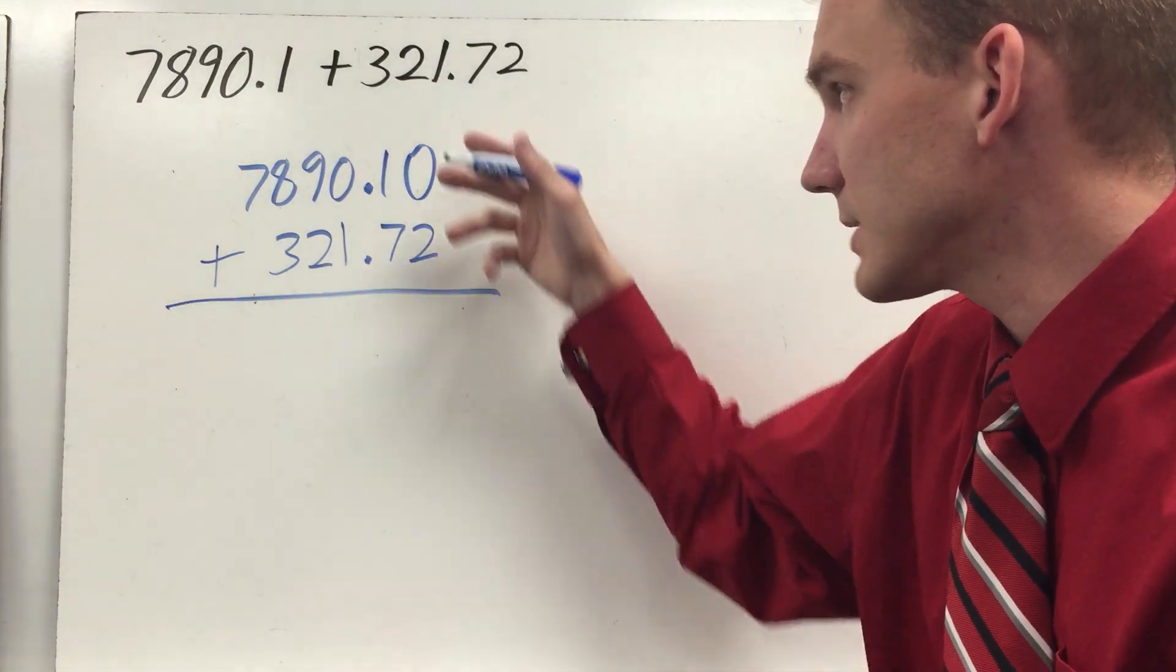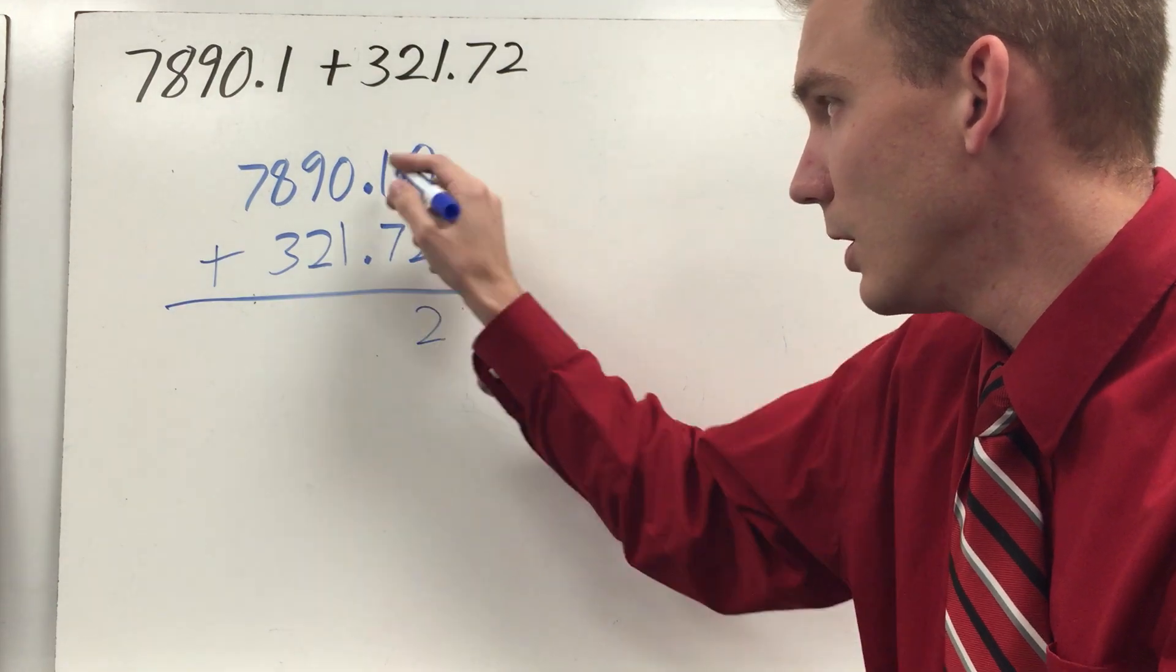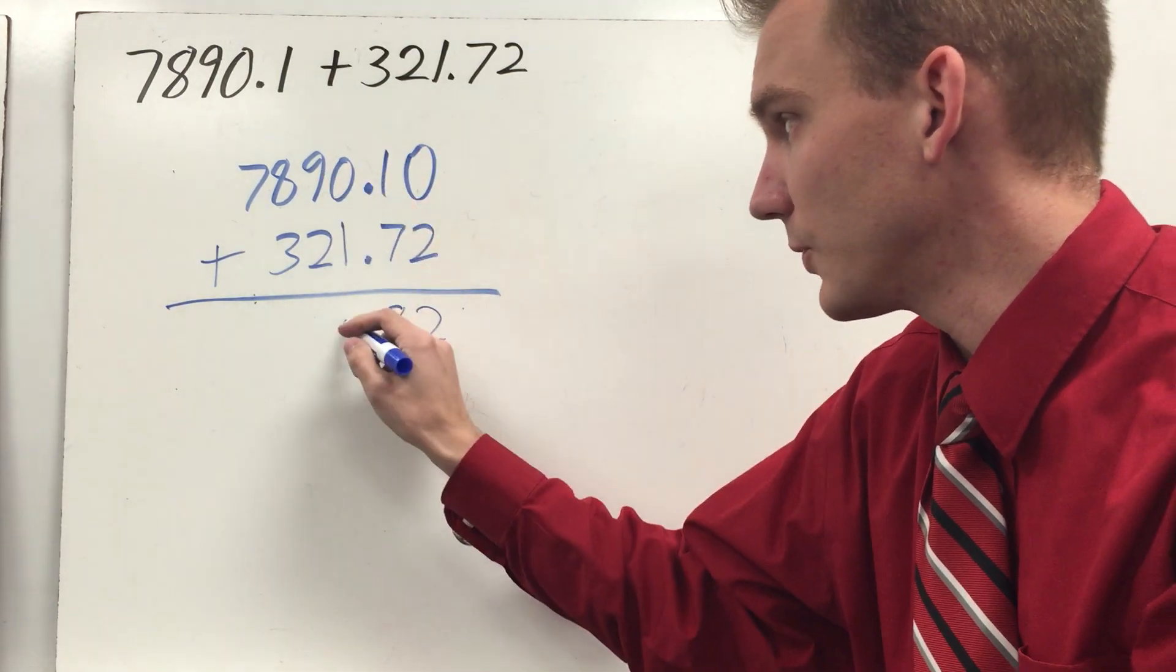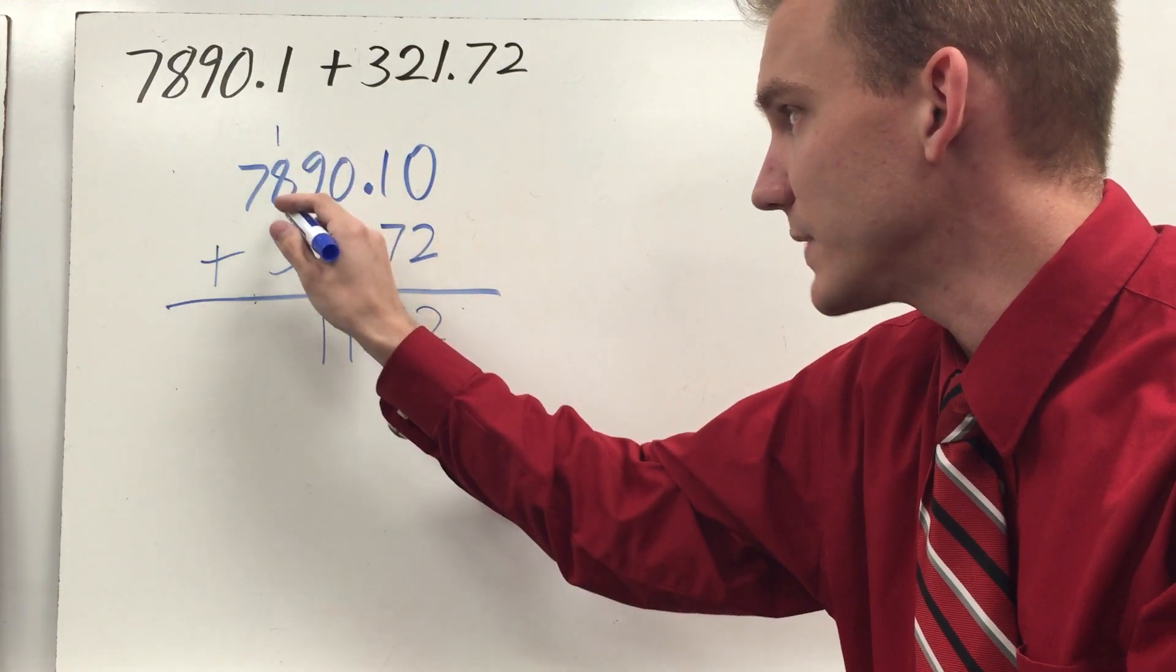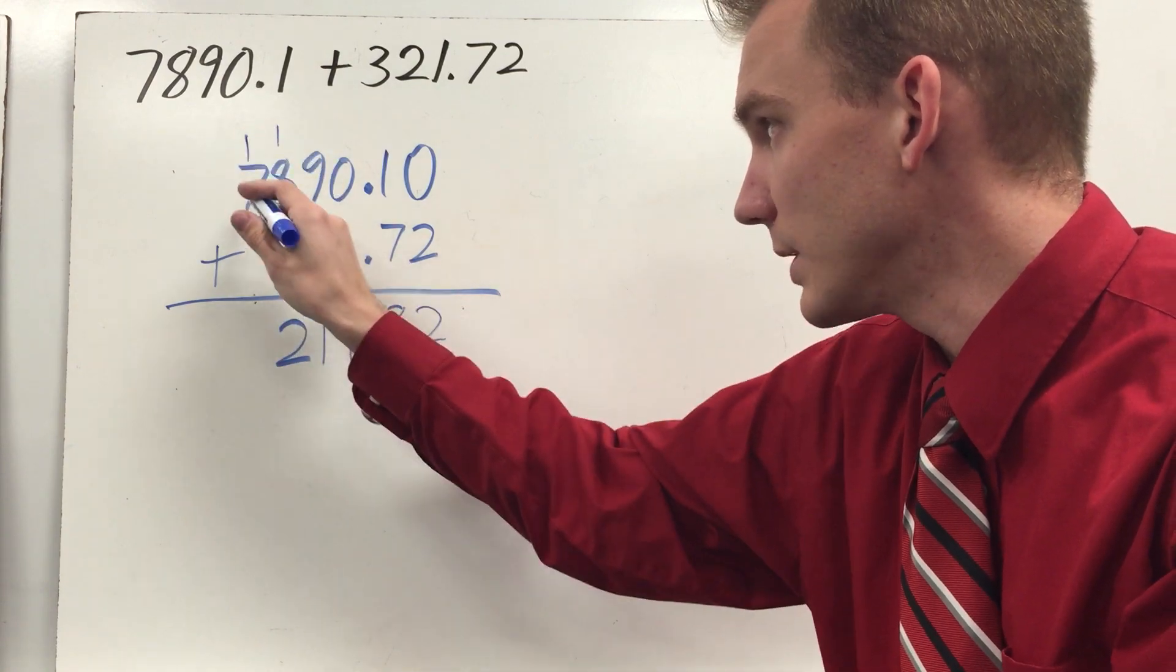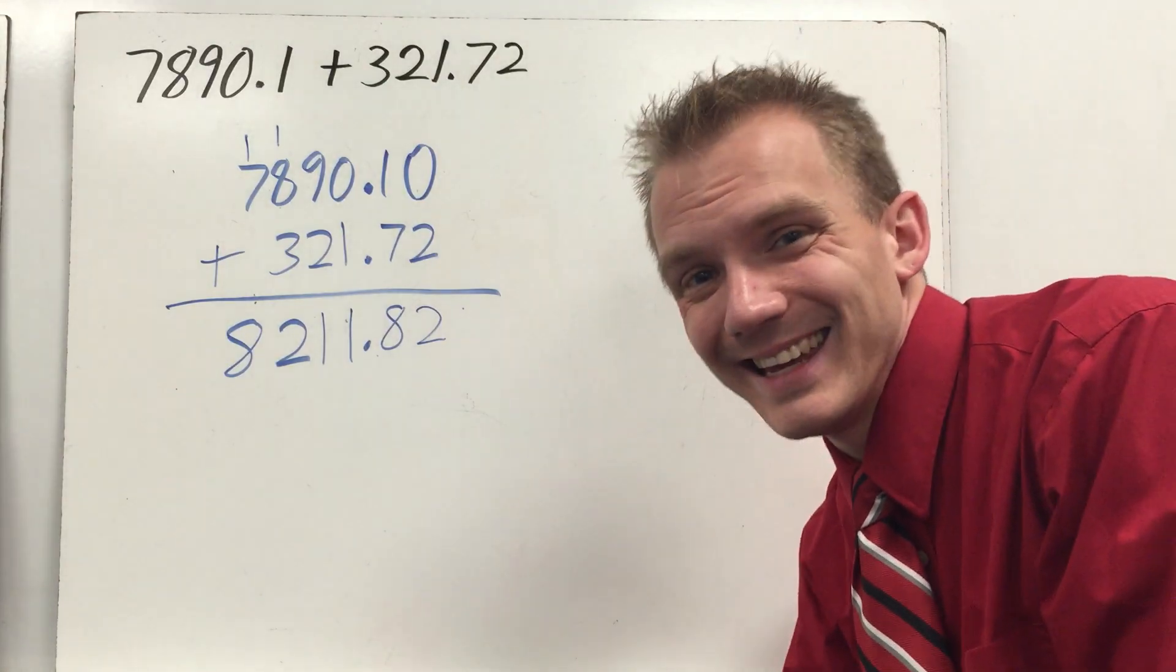And that's going to help me when I add because I start all the way to the right and I still have to add the hundredths. Zero plus two, that's two. One plus seven, that's eight. Bring down my decimal point. Zero plus one is one. Nine plus two, eleven. Regroup. One plus eight is nine, plus three, twelve. Regroup. One plus seven, eight. 8,211.82 - eight thousand, two hundred eleven and eighty-two hundredths.